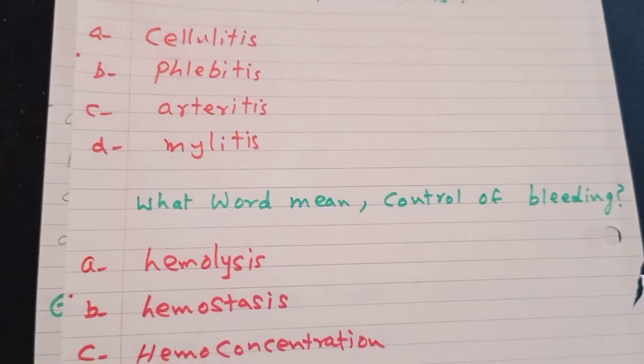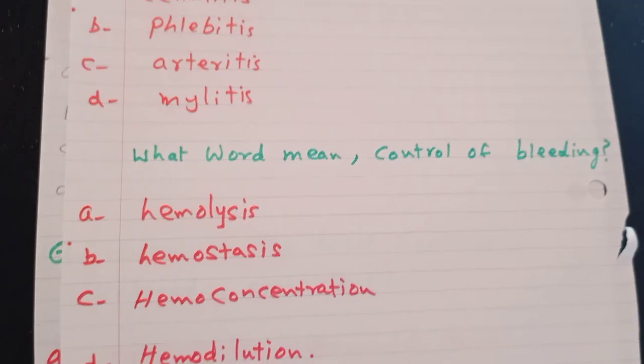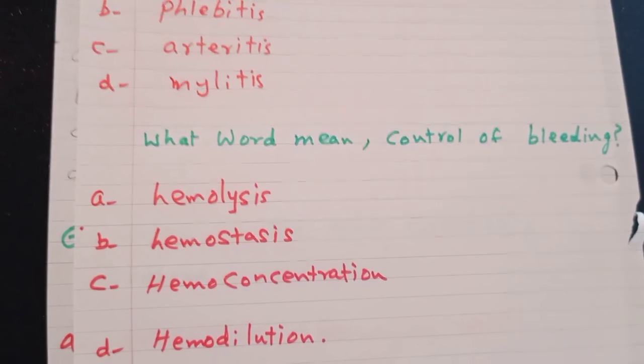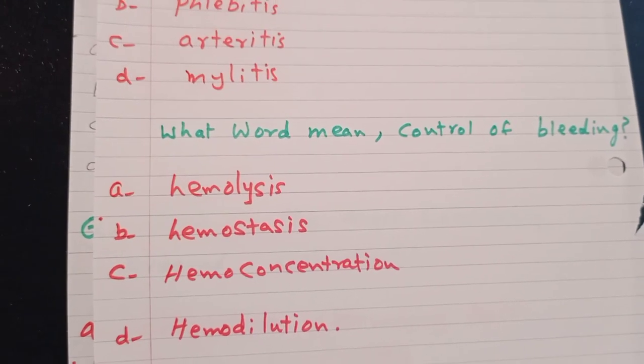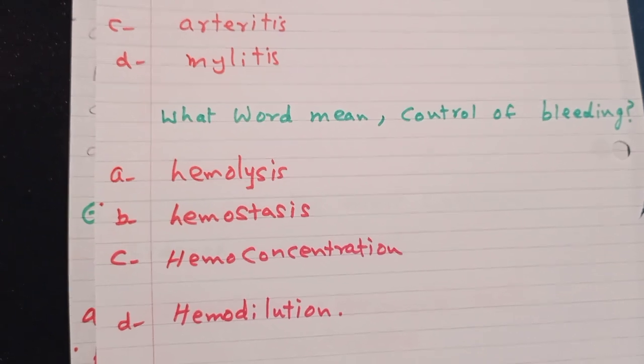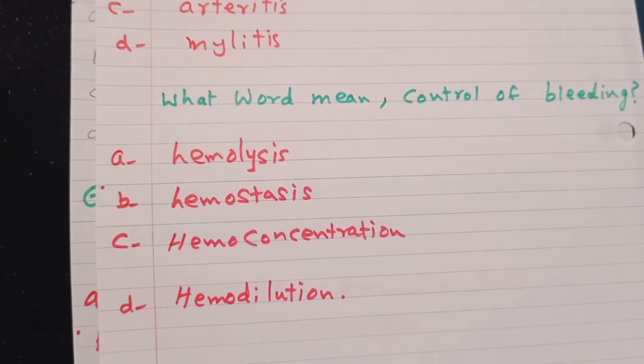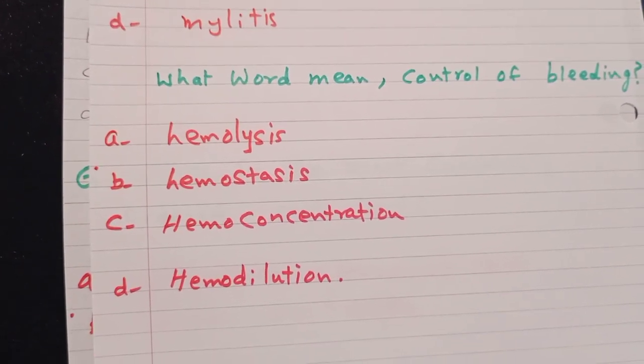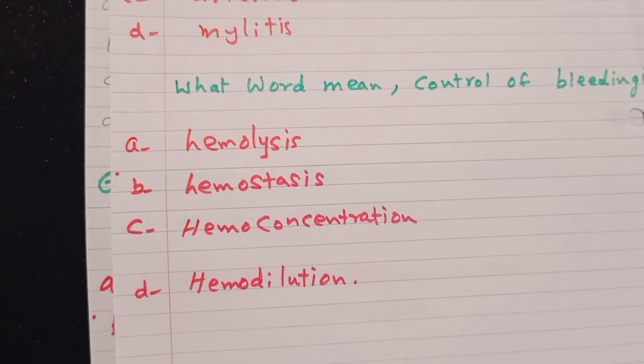What word means control of bleeding? Hemolysis, hemostasis, hemoconcentration, hemodilution. The answer is B, hemostasis.